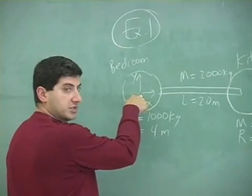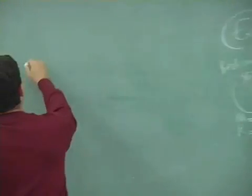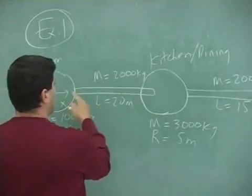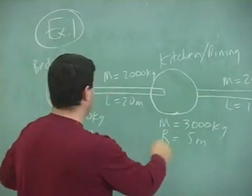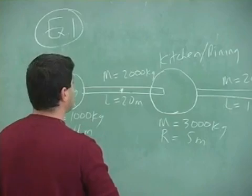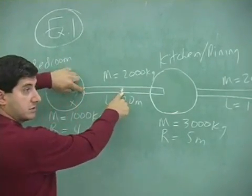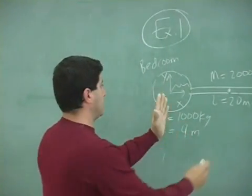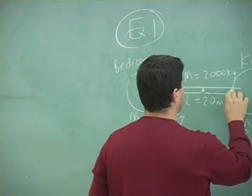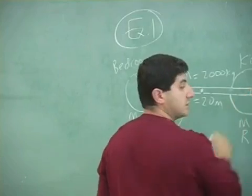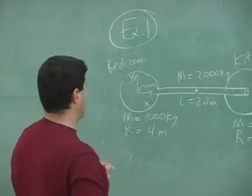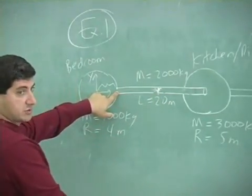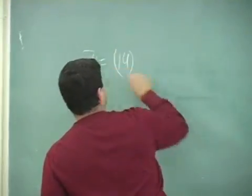So I'm going to find the center of mass of the system with respect to that coordinate system. X-bar equals — its own center of mass is zero, so that one cancels. The hallway is uniform, so its center of mass is at its center: 10 meters. From my origin to the center of the hallway is 10 meters plus 4 meters (the radius of the bedroom), giving 14 meters. So the hallway has a mass of 2,000 kilograms at 14 meters from my coordinate system.